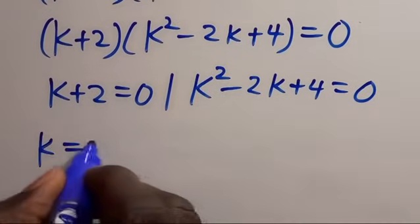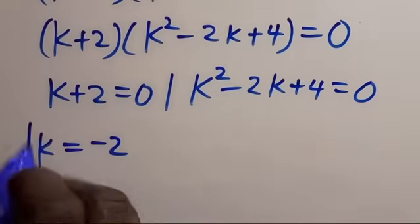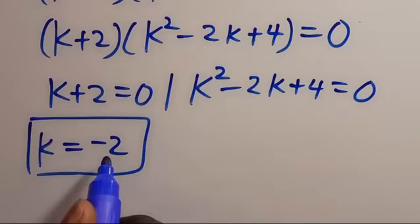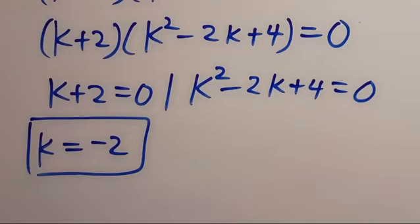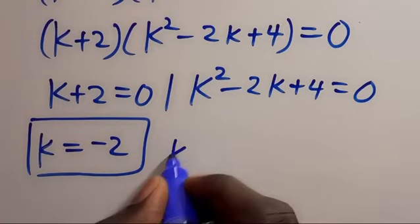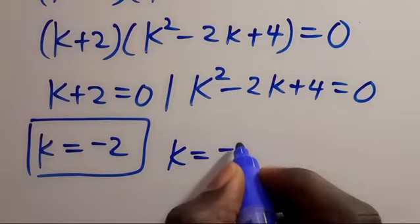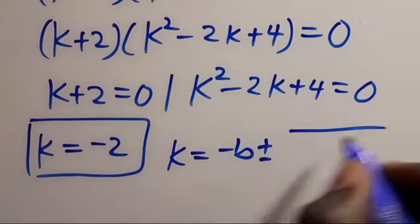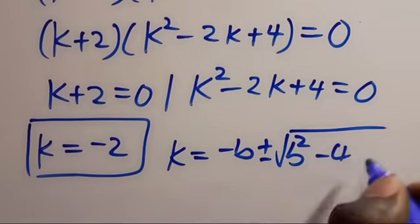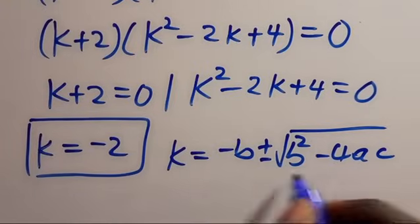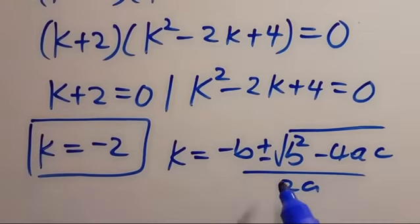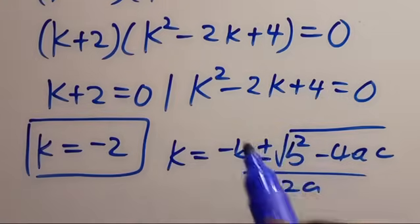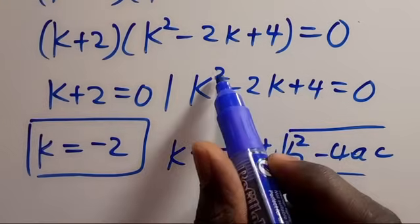From k + 2 = 0, we get k equals −2. From the previous direct comparison, we had k equals 2. For the quadratic k² − 2k + 4 = 0, we need to use the quadratic formula to get further values of k, since k appears to the power of 2.